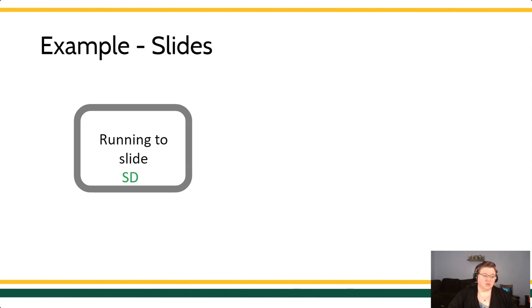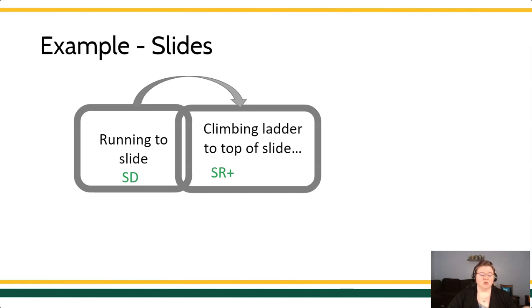In this case, you have to approach, physically approach the slide. You have to get into a position where you can get near the ladder. Running to the slide is a discriminative stimulus. It provides an opportunity to emit the next response in the chain, which is climbing that ladder, putting one little foot in front of the other. So the next response that occurs is starting to climb up that ladder. The running to the slide made climbing the ladder possible. That was an SD.